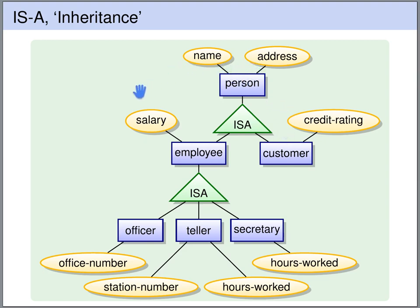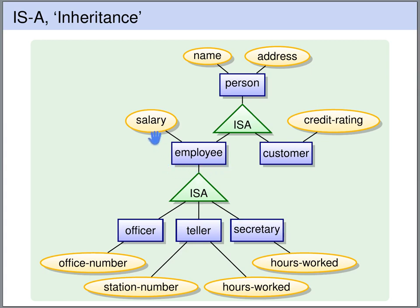Furthermore, we express that every officer is an employee, every teller is an employee, and every secretary is an employee. So the officer, teller, and secretary all inherit the attributes of employee — meaning they all inherit the attributes salary, name, and address.